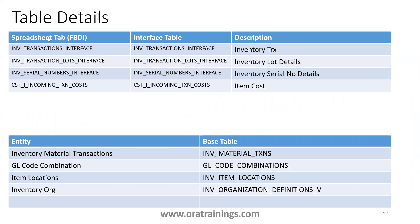These are the table details. The FBDI has four sheets, and the sheet names represent the interface tables: Inventory Transaction, Lot Details, Serial Number Details, and Item Cost. There is no separate error table — error description details are available within the interface table columns. The major base table is INV_MATERIAL_TXNS, which holds inventory transaction details. Dependent tables include GL Code Combination, Item Location, Inventory Org, and Item Master.